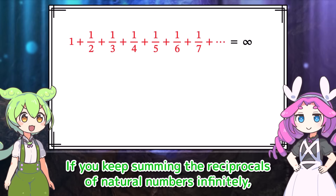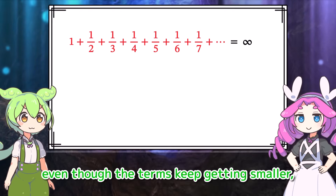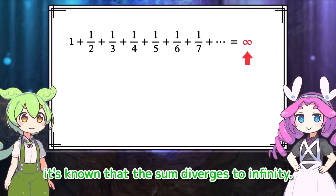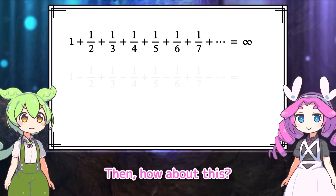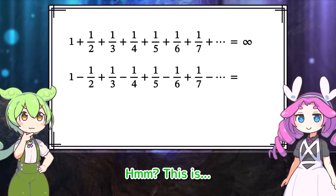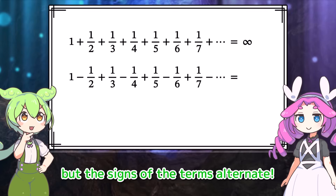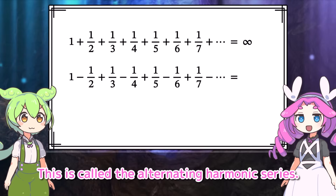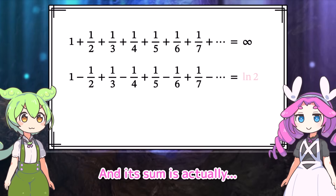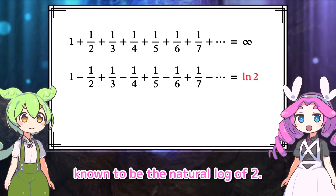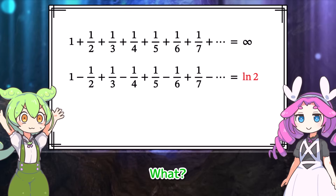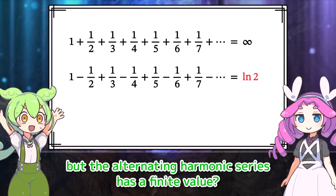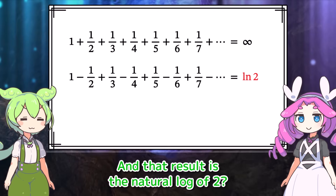If you keep summing the reciprocals of natural numbers infinitely, even though the terms keep getting smaller, it's known that the sum diverges to infinity. This is called the alternating harmonic series, and its signs alternate between positive and negative. The harmonic series diverges to infinity, but the alternating harmonic series has a finite value — and that result is the natural log of 2.